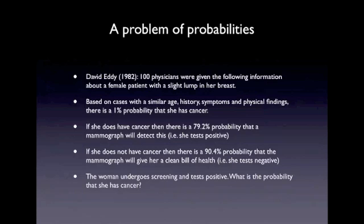What we want to know is: in this case, the woman undergoes screening and tests positive. What is the probability that she had cancer? Previously, I showed how we can use Bayes' theorem to solve this particular problem, to give us an updated estimate of probability in this instance.